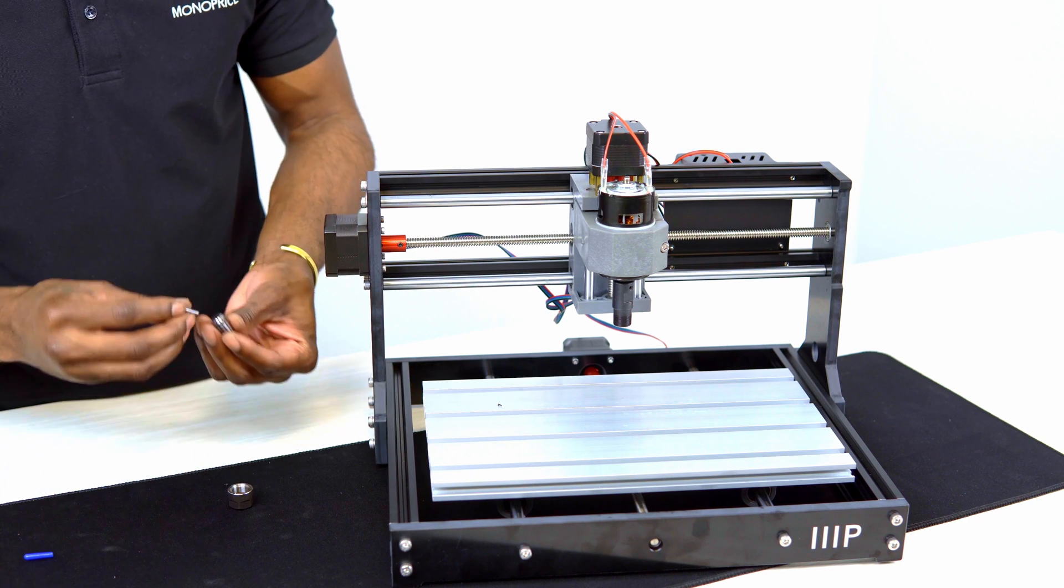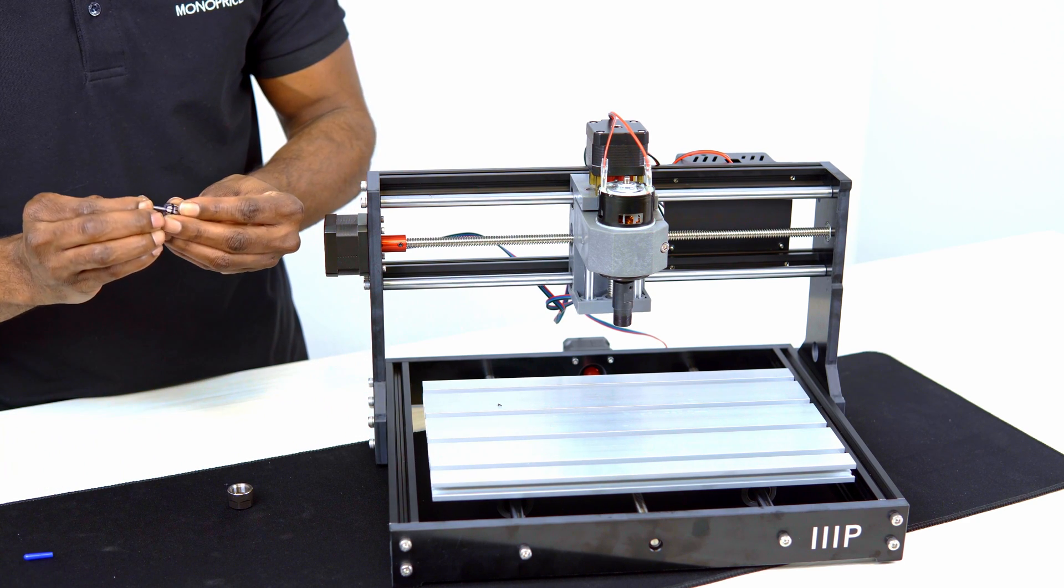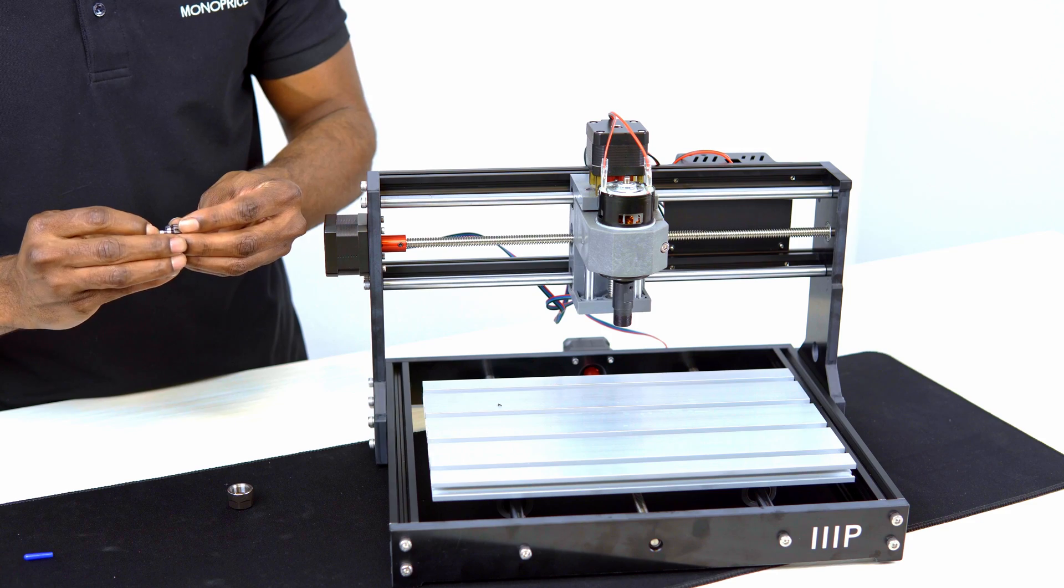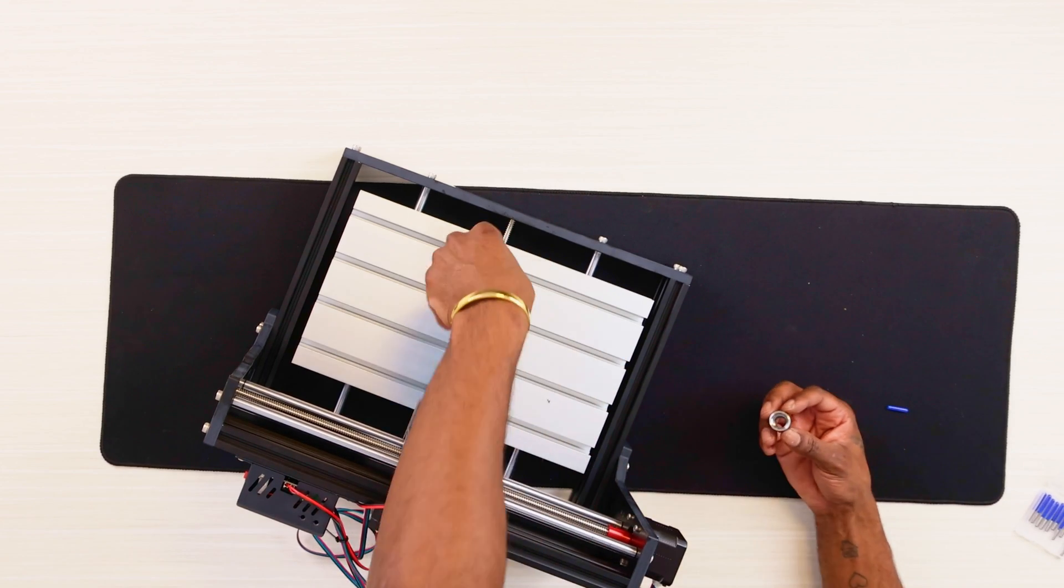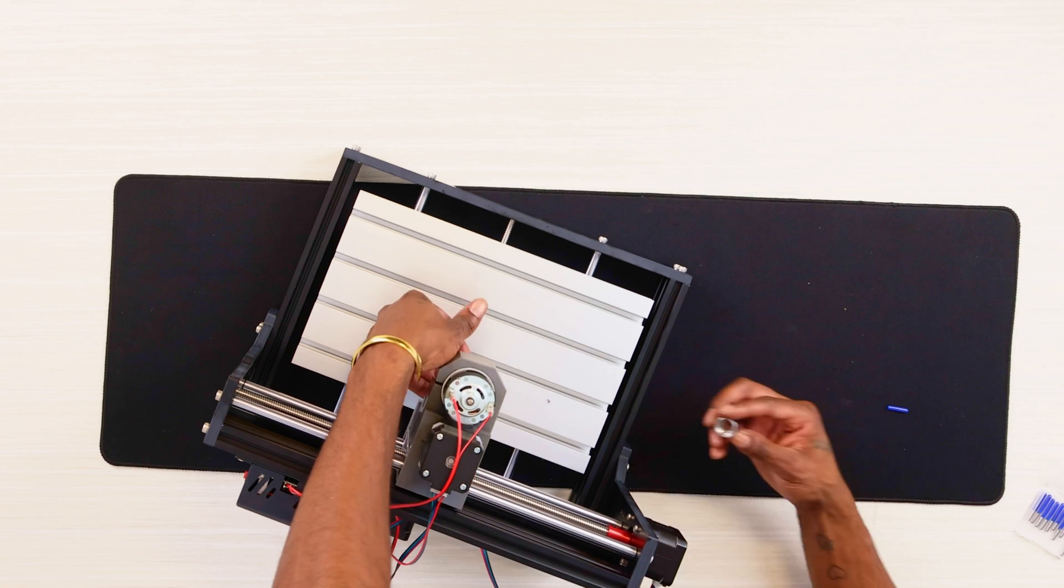Now let's insert the ER11 spindle motor chuck into the spindle assembly, narrow end first, then insert the milling cutter into the ER11 spindle motor chuck and screw it into place. Now at this point you're ready to prepare your project. We will cover this more in detail in the next video and in the meantime, have a great rest of your day.